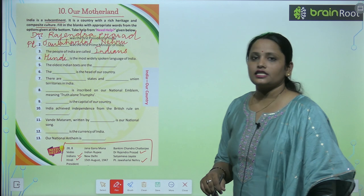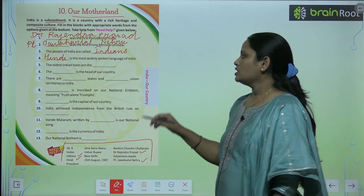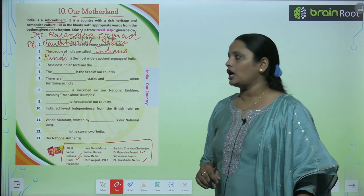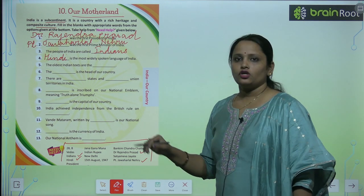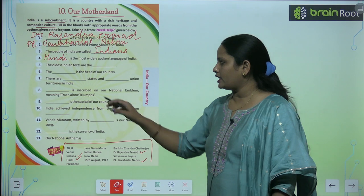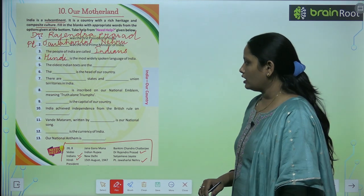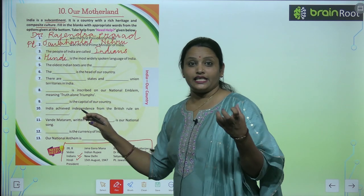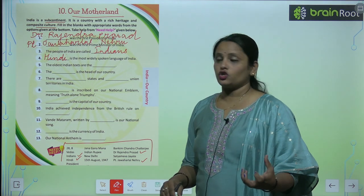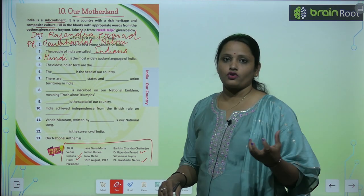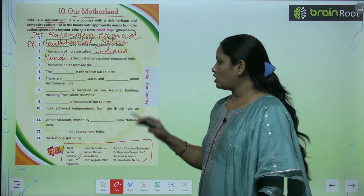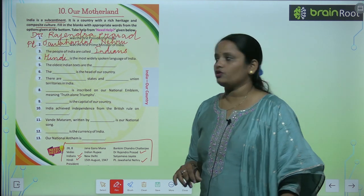'Dash is inscribed on our national emblem, meaning truth alone triumphs.' Something is written on our national emblem whose meaning is 'truth alone triumphs.' So what is that thing written on our national emblem?